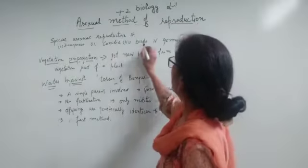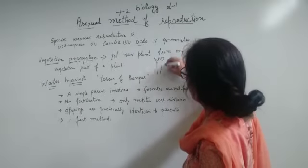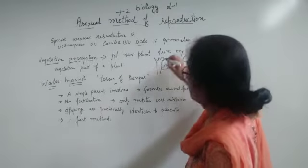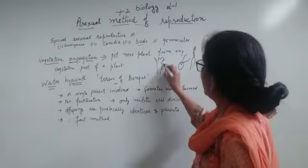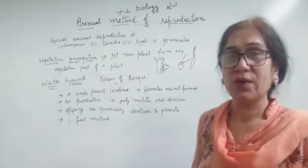Then, the third one is buds. It is found in hydra. This is the hydra. On the side, a small bud is formed. This part will detach from here, yahan se nikal jaate hai, and give the new organism.